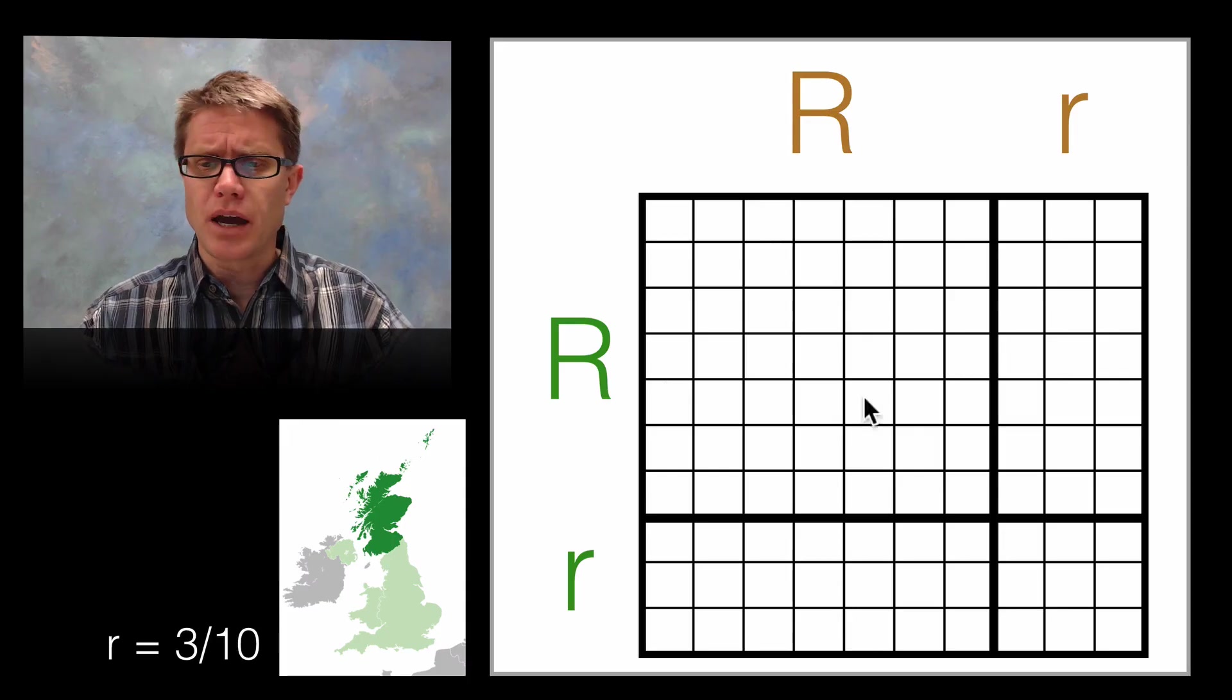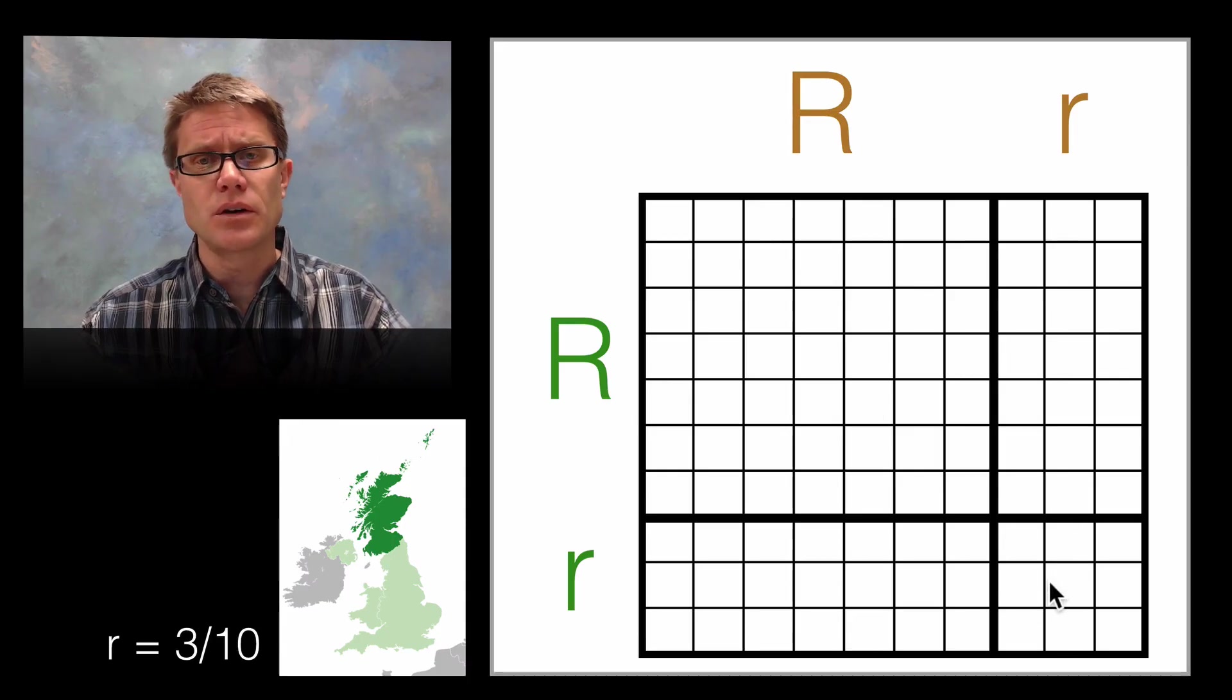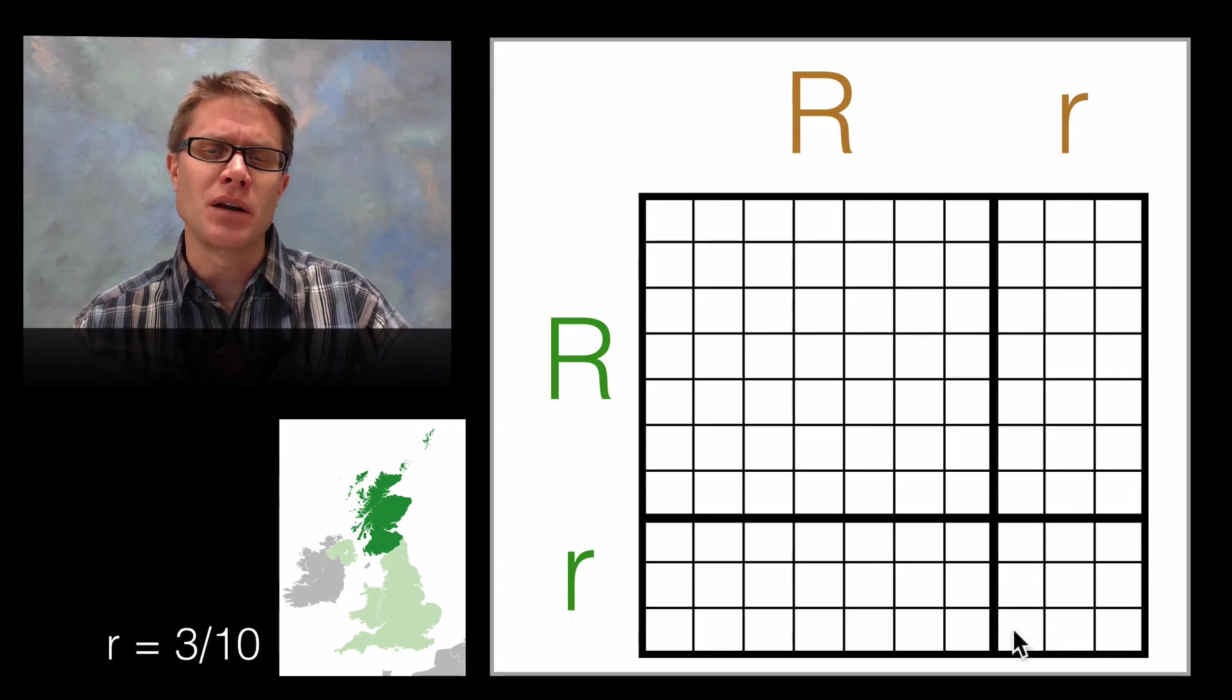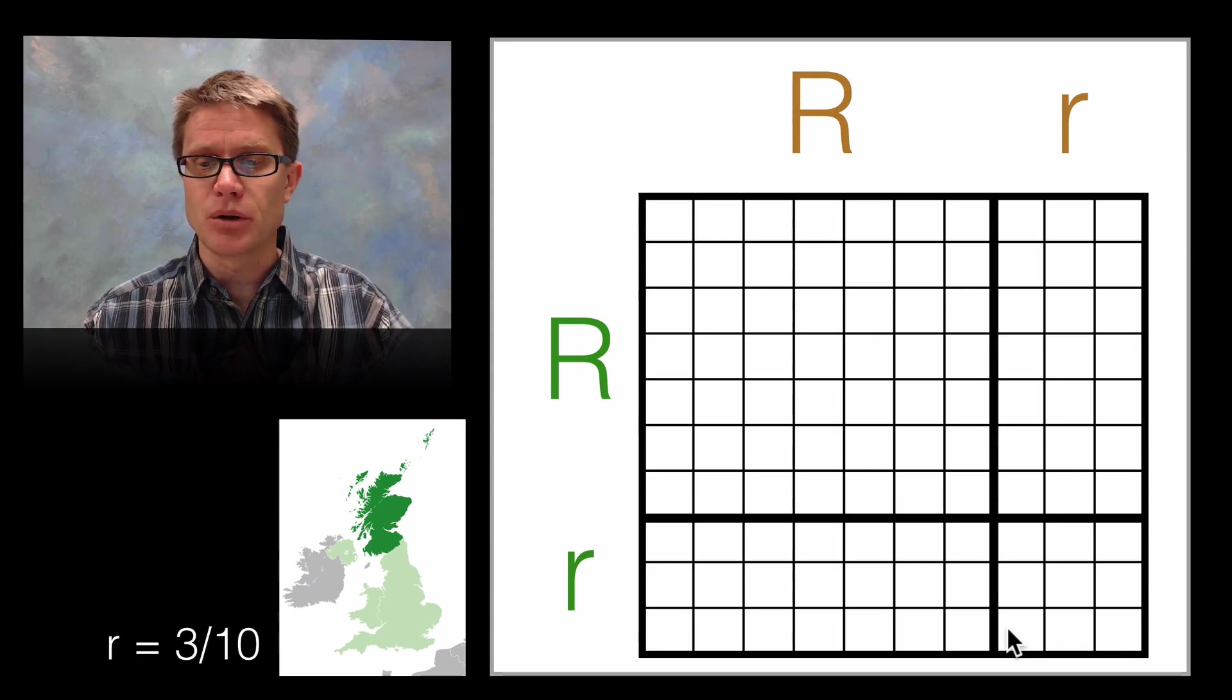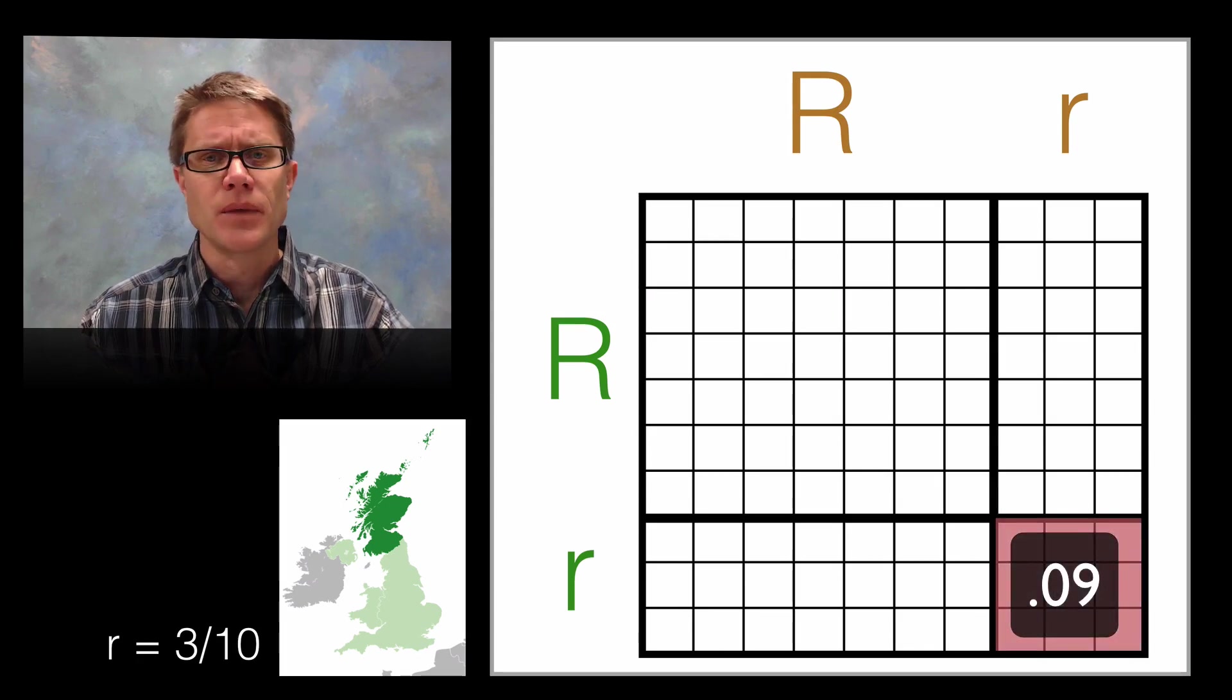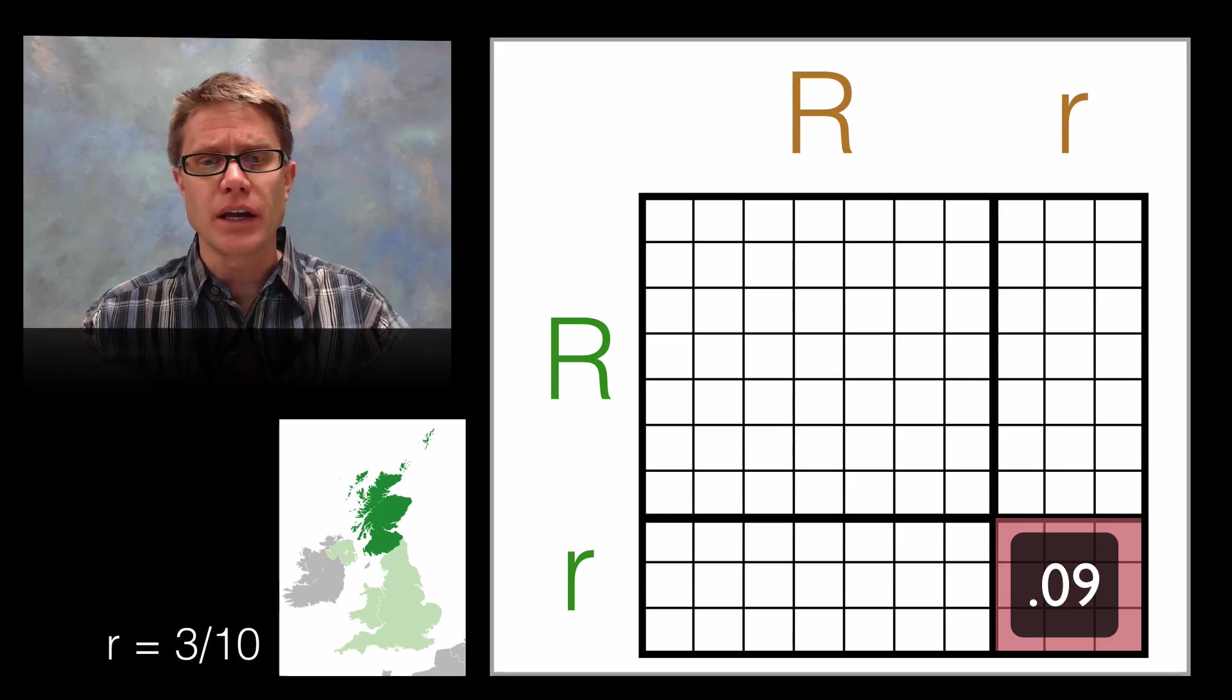Now what are the odds that I'm going to have somebody with red hair? Well it's going to be in this box right here. So it's going to be 3 in 10 times 3 in 10. Or you could just count the boxes. It's going to be a 9 out of 100 probability. Or we would call that 9 percent. So that's going to be right here.